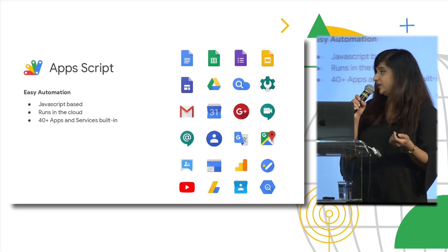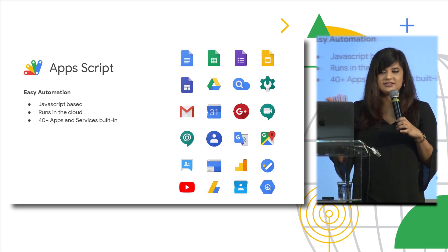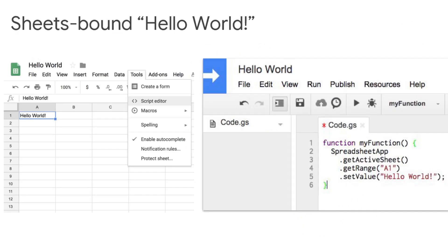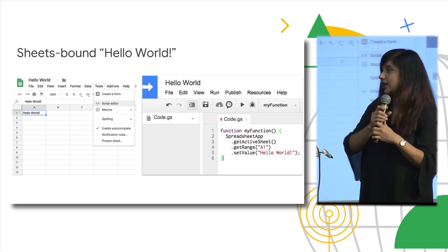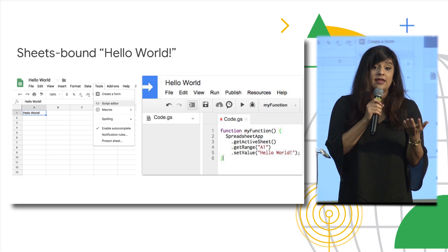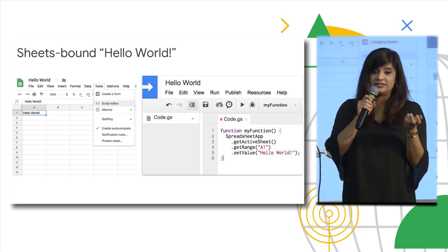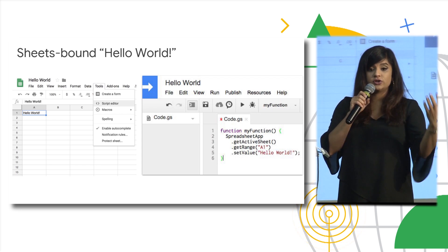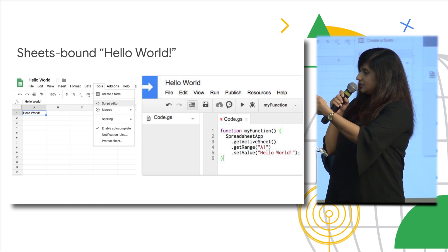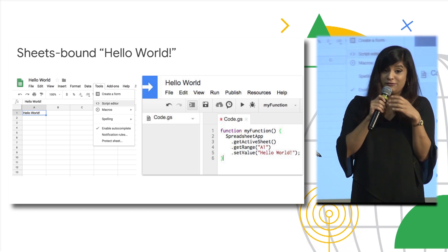What's neat about Apps Script is that there are actually over 50 built-in libraries for a lot of these products — Docs, and even products outside of G Suite like BigQuery, Maps, and YouTube. It's actually been hiding there the whole time — have you ever looked at the Tools menu and seen the Script Editor? This is our version of hello world: 'SpreadsheetApp' is how you call that built-in library for spreadsheet, and with only five lines of code I can say hello world in the first cell. Since I'm calling it on the active sheet, I don't even need the file ID — Apps Script handles all authentication automatically.